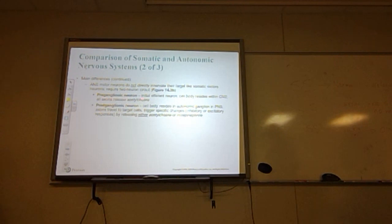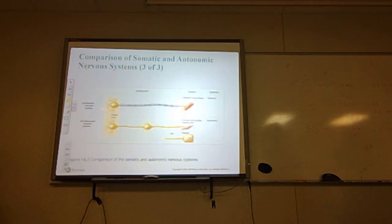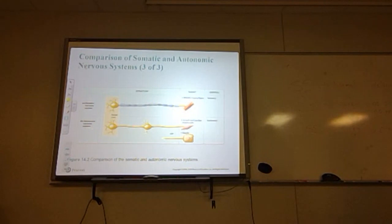So the pre-ganglionic neuron releases acetylcholine; the post-ganglionic releases either acetylcholine or norepinephrine. In the diagram, the somatic nervous system goes directly to skeletal muscle, while the autonomic nervous system has an axon leading to a cell body and then another axon to a gland or smooth muscle. Voluntary control applies to the somatic system; involuntary control applies to the autonomic system.